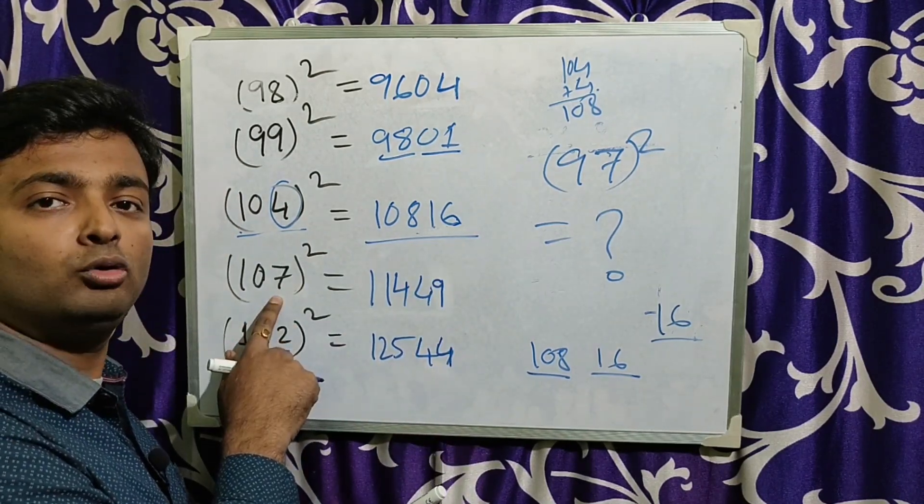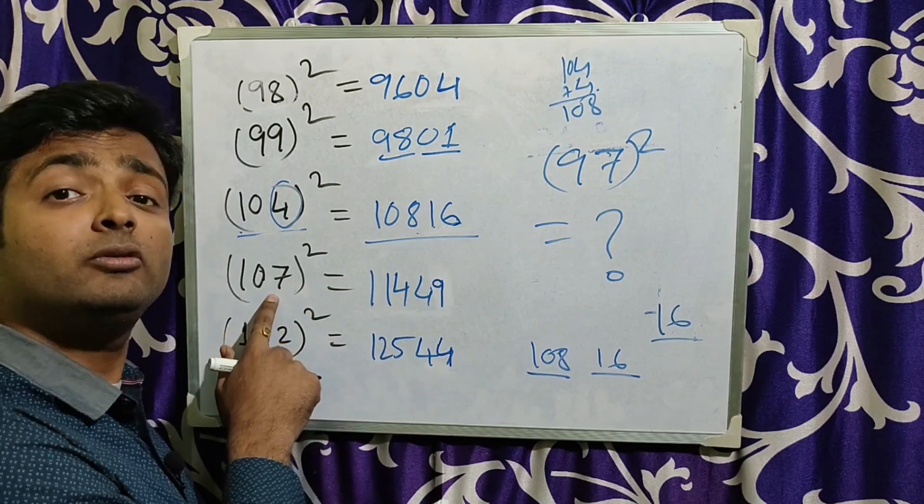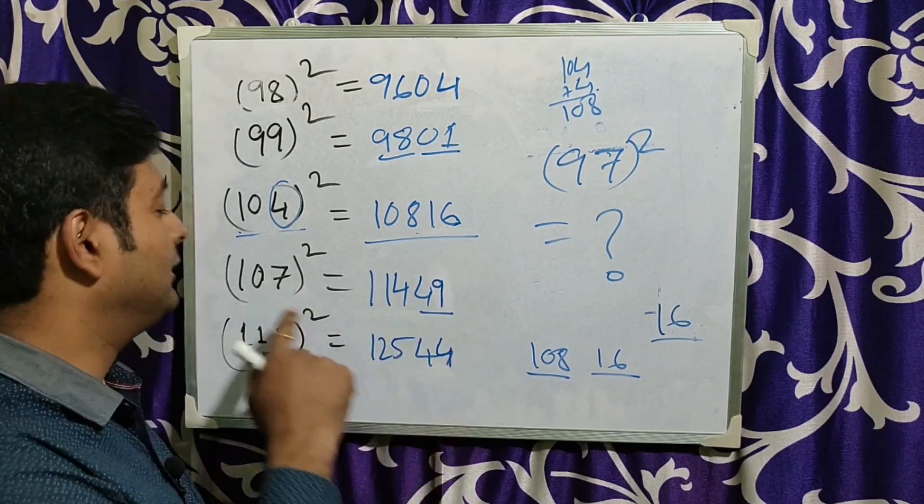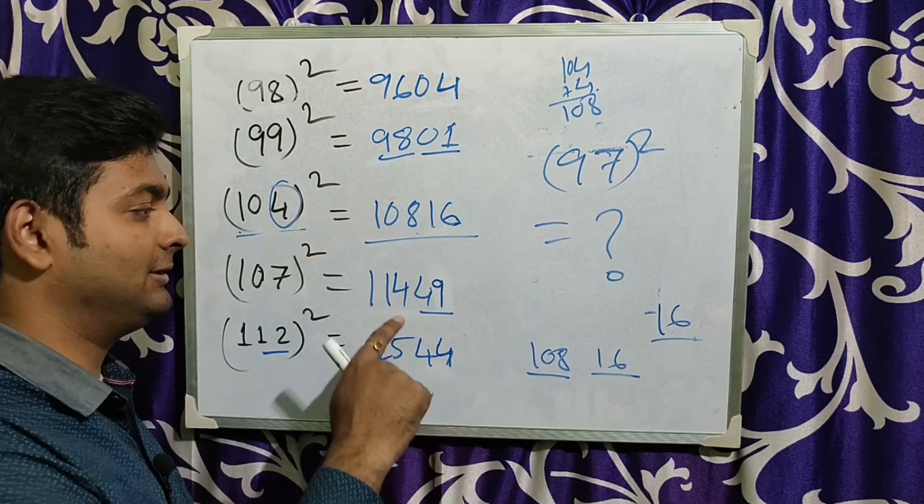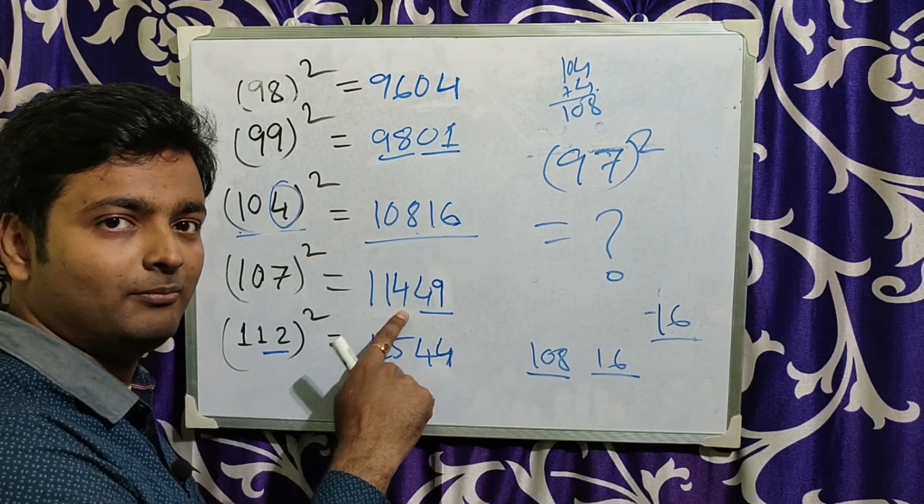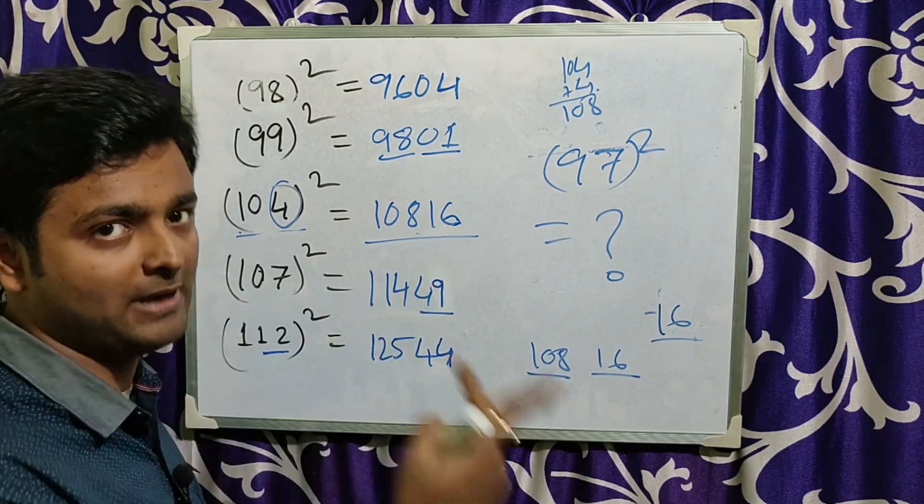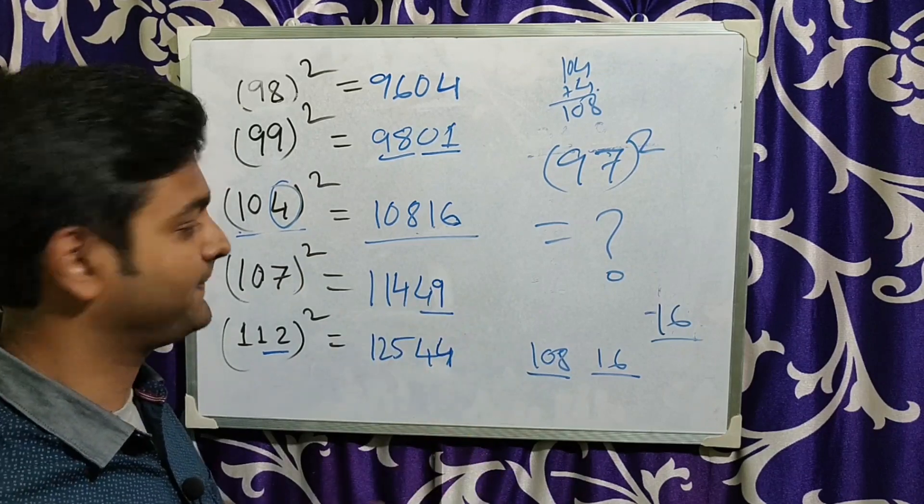That 107 square, how to do that? Now simply 7 square is what? 49. And 107 plus 7, that is 114. Because I have told you, it is more than 100 means plus. Less than 100 means minus.